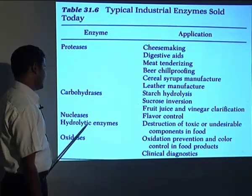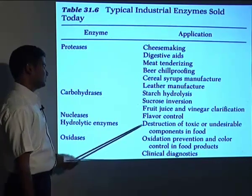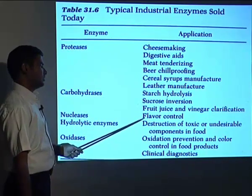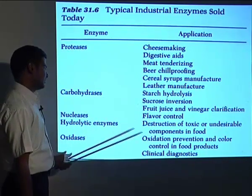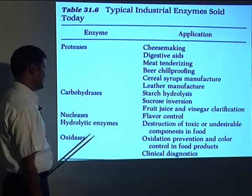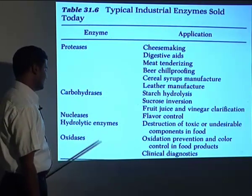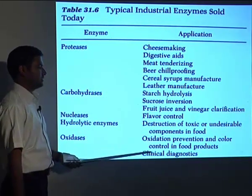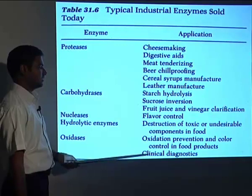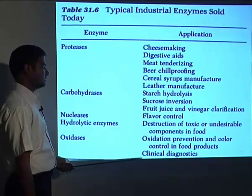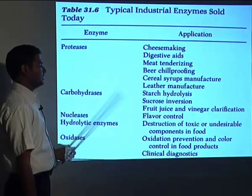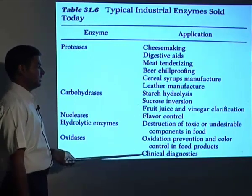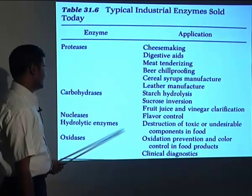Nucleases and hydrolysis enzymes are used for the destruction of toxic and undesirable components in food. Oxidases are used for oxidation prevention and color control in food products, and also for clinical diagnostics.